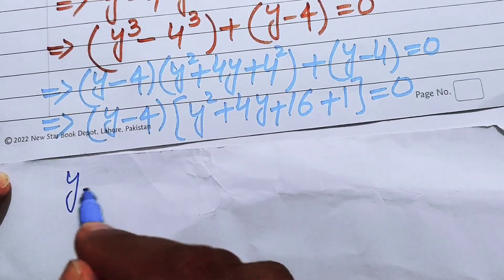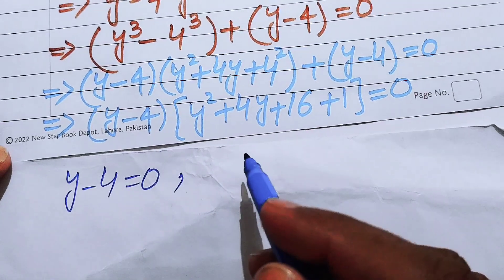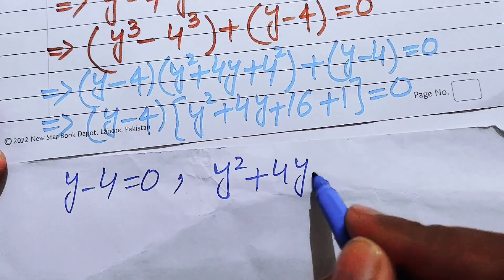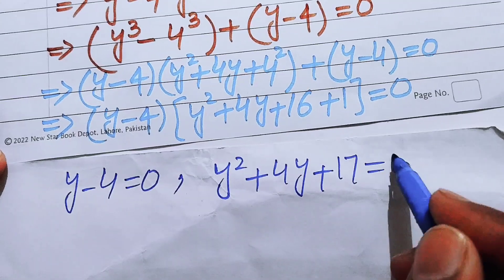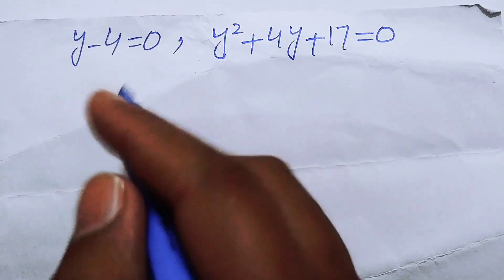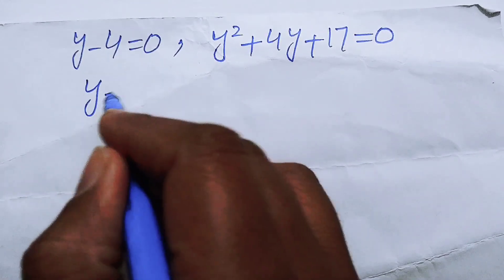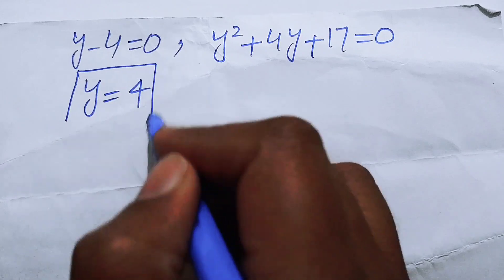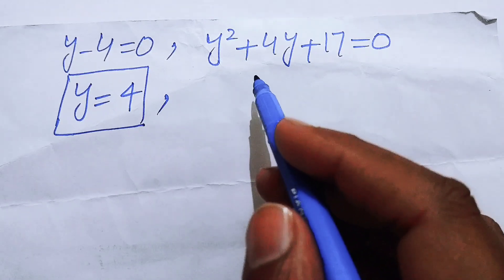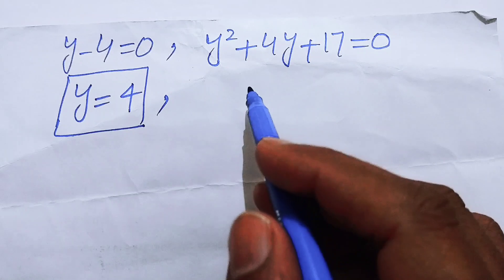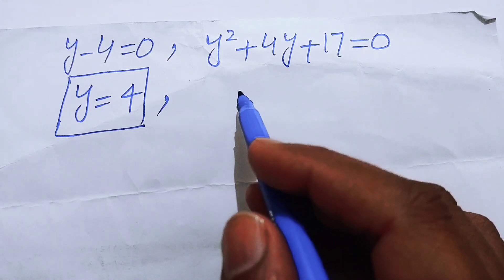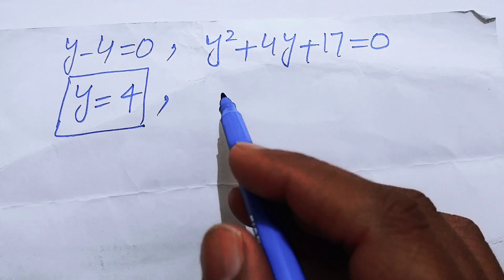We now have two cases. Case one: y minus 4 equals 0. Case two: y squared plus 4y plus 17 equals 0. We need to check whether the quadratic in case two has real roots, since n represents a side length of the triangle and must be a real number.